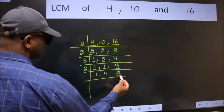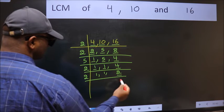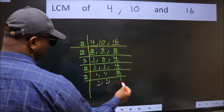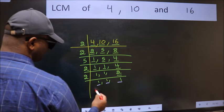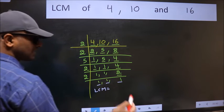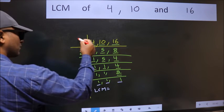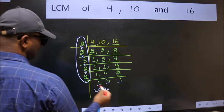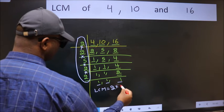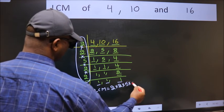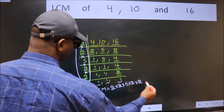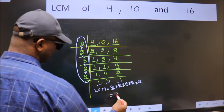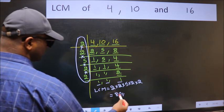Now here we have 2. 2 is a prime number, so 2 times 1 is 2. So we got 1 in all 3 places. Our LCM is the product of these numbers — that is 2 into 2 into 5 into 2 into 2. When we multiply these numbers, we get 80 as our LCM.